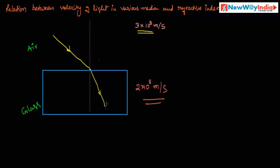We have discussed the velocity of light in vacuum or air — that is 3 into 10 power 8 meter per second. When light enters into a different, optically denser medium such as glass, it gets slowed down. The velocity of light in glass is 2 into 10 power 8 meter per second.